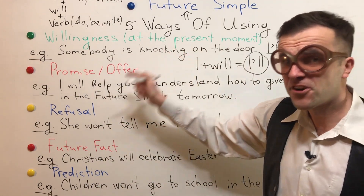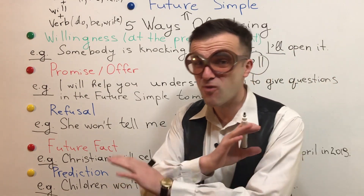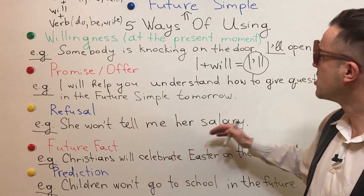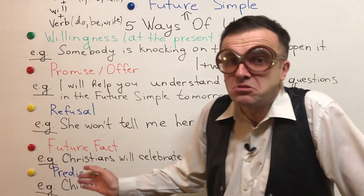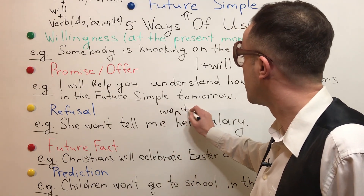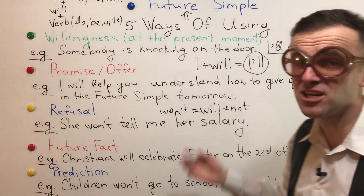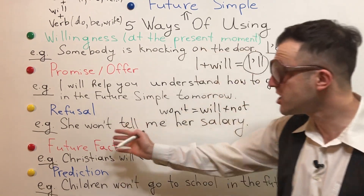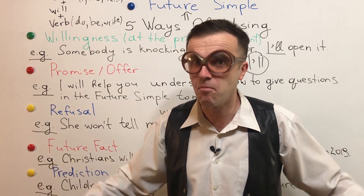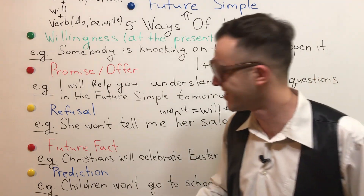Let's go to the third way of using the Future Simple: refusal. You refuse — you don't want to do something. For example: 'She won't tell me her salary.' What is 'won't'? Won't is the combination of will plus not, so it's a negation — a negative form. She won't tell me her salary; maybe her salary is very big or very low.